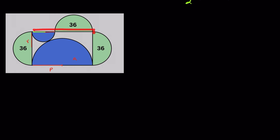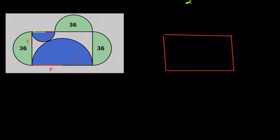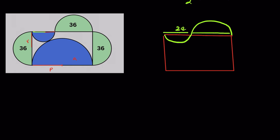Now consider this rectangle. First, we have a semi-circle with radius Q, so the diameter — this length — will be 2Q. Then we have a semi-circle with radius R, so the diameter — this length — will be 2R. Then here we have a semi-circle with radius P, so the diameter — this length — will be 2P.